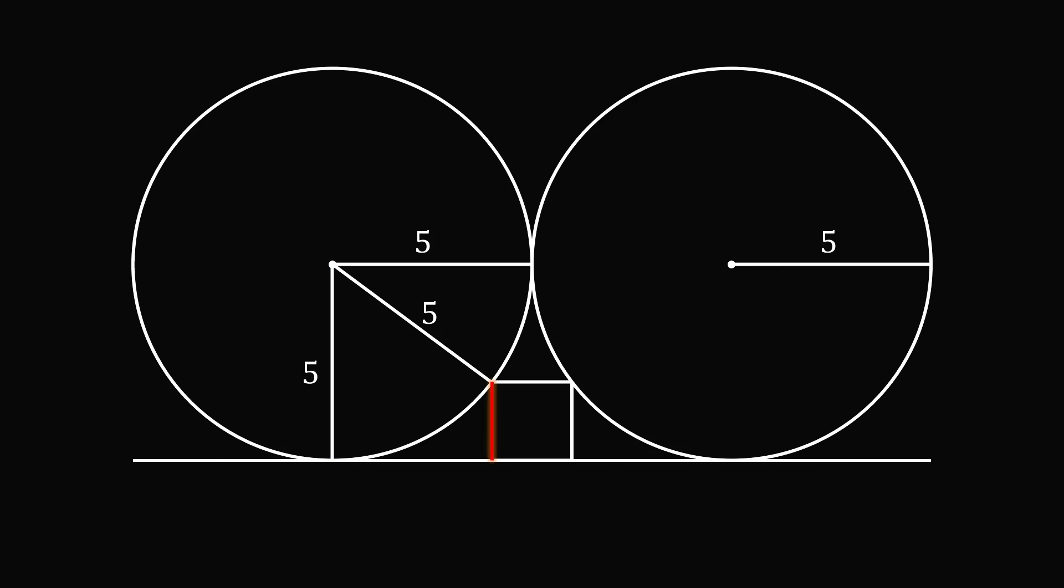We can also take this radius length and we can swing it down to the point of tangency. Since it's a radius, this will also have the same length and it's equal to 5. Let's now suppose the side of the square has a length that's equal to x.